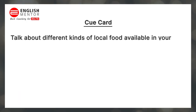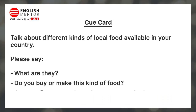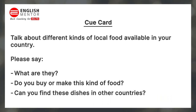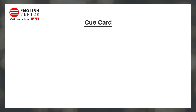The cue card topic is to talk about different kinds of local food available in your country. Please say what they are, do you buy or make this kind of food, and can you find these dishes in other countries?